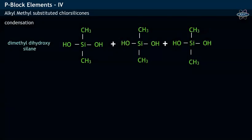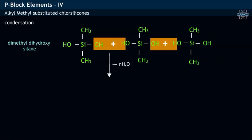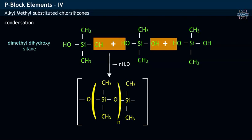When a number of dimethyl dihydroxysilane molecules come closer, they lose water molecules—that is, undergo a condensation reaction—and thereby result in the formation of a silicone having the structure shown. Silicone is a straight-chain condensation polymer which consists of Si-O-Si linkages.